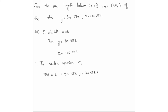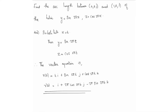Now we find r'(t). The derivative of t is 1 for the i-component. The derivative of sin(2πt) is cos(2πt) · 2π = 2π·cos(2πt) for the j-component. The derivative of cos(2πt) is −sin(2πt) · 2π = −2π·sin(2πt) for the k-component.